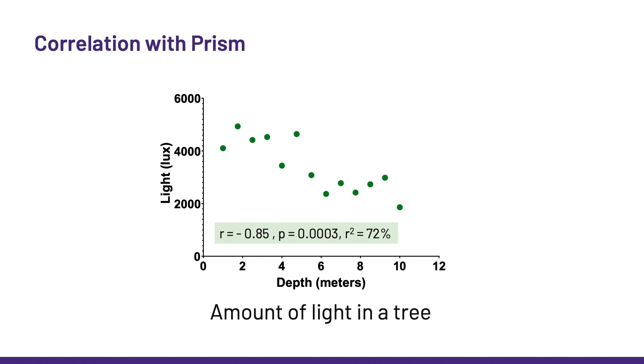So strong, negative association, and about 72% of the variability in light can be explained by the depth at which we measure it, which is quite a lot. Now, we look at this graph and we think, wait a minute, where is my line of best fit? Well, as I said a few slides ago, the line of best fit does not come from a correlation, but from a regression. So we have to ask Prism to do it.